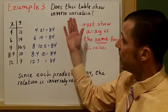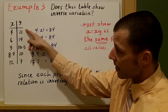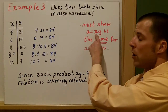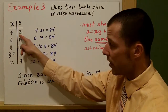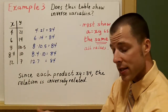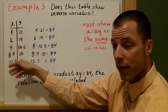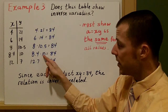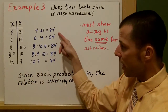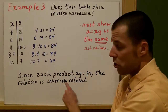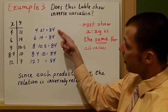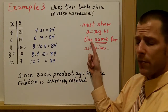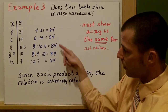Example three asks if a data set shows inverse variation. We know a equals x times y, so we need to verify that all products x times y equal the same number, because a is a constant. Multiplying through: 4 times 21 is 84, 6 times 14 is 84, 8 times 10.5 is 84, and 8.4 times 10 is 84. All products equal 84, so yes, this data set shows inverse variation with a equals 84.